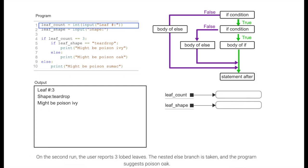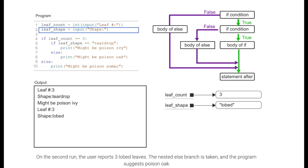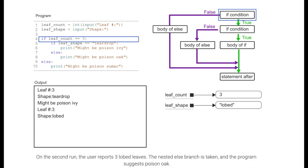On the second run, the user reports three lobed leaves. The nested else branch is taken, and the program suggests poison oak.